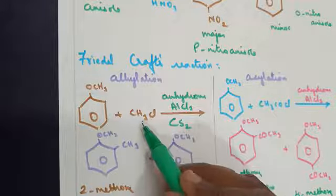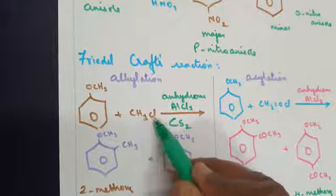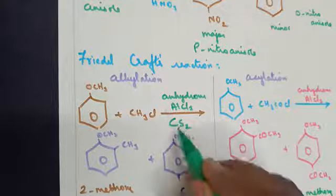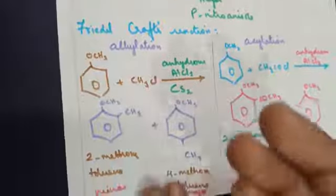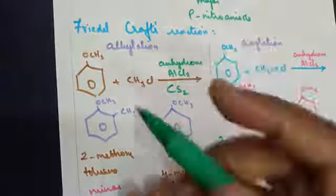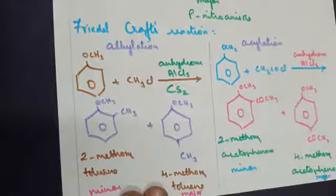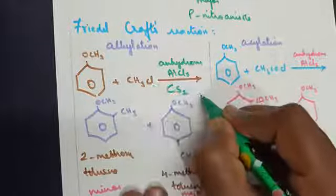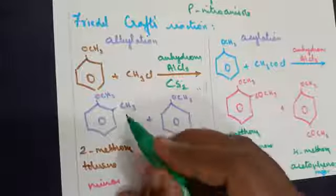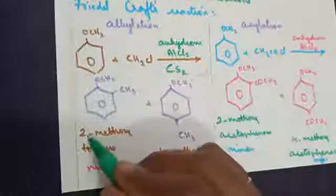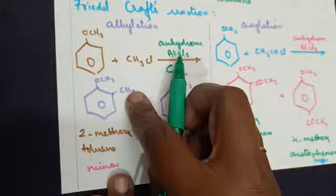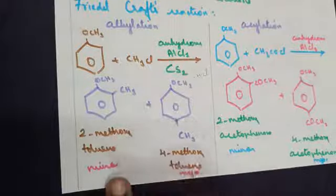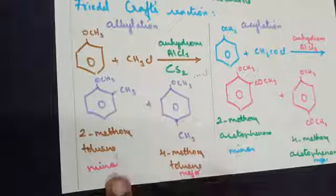Alkylation means treating it with an alkyl halide, that is CH3Cl, in the presence of anhydrous AlCl3 and carbon disulfide. Here also, two products are possible at the ortho position and para position. If there is a hydrogen here, it combines with Cl and goes out as HCl. So, you will get 2-methoxytoluene. You know, benzene ring with a CH3 group is called toluene. 2-methoxytoluene, being at ortho position, is a minor product.